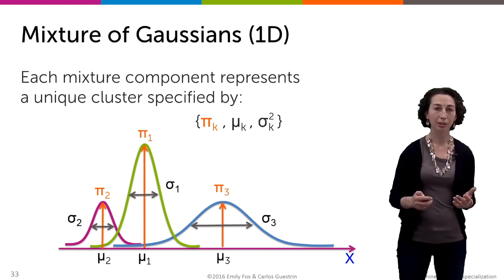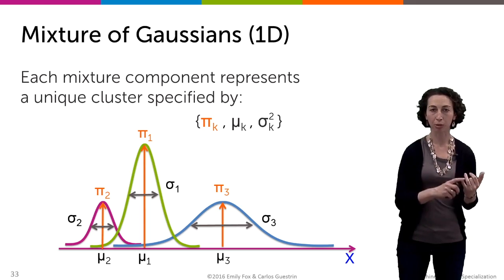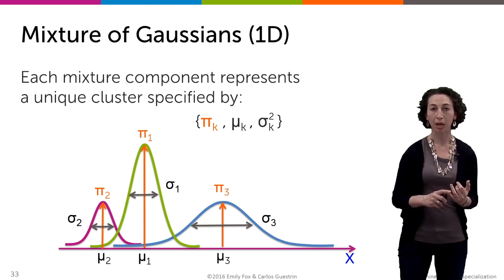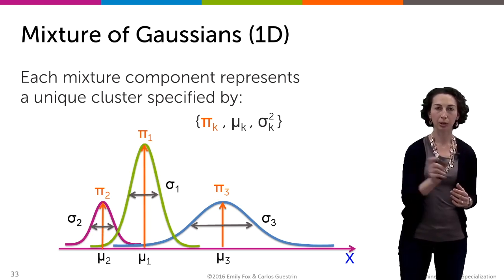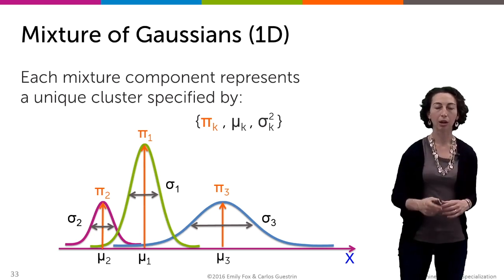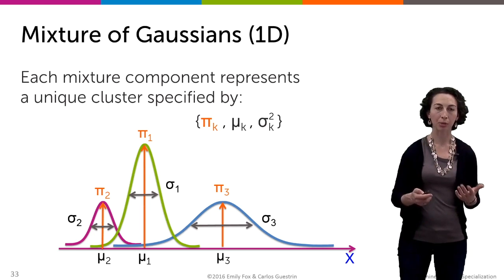Finally, to complete our mixture model specification, or mixtures of Gaussians in particular, not only do we have a mixture weight for each one of our different clusters, we also have a cluster-specific mean and variance term in one dimension. Remember that those means and variances specify the location and the spread of each one of these different distributions that comprise our mixture model.